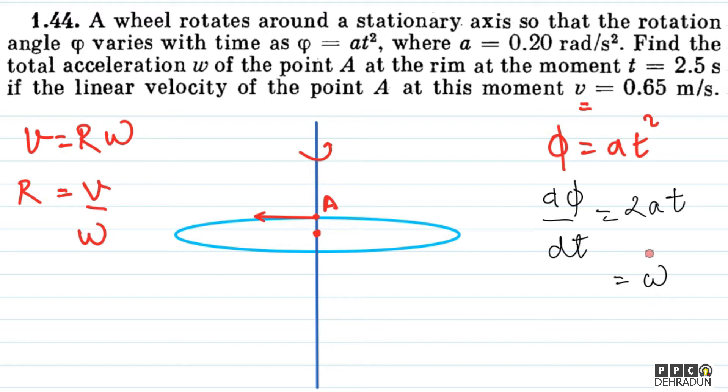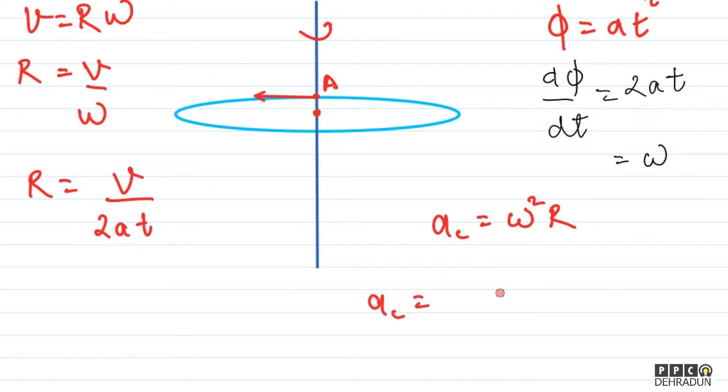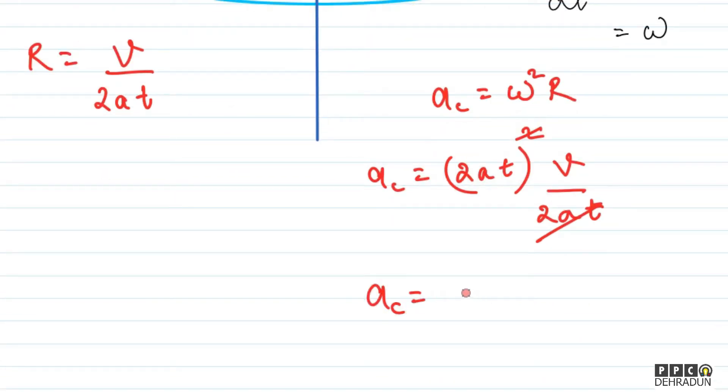We have v given and omega we can calculate as 2at, so r equals v upon 2at. Now that we have radius, we can easily find centripetal acceleration. Centripetal acceleration will be omega squared r. So a_c equals (2at)² times r, which is (2at)² times v upon 2at. One 2at cancels, giving a_c equals 2atv. This is one component of acceleration.